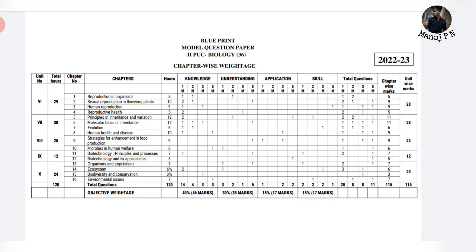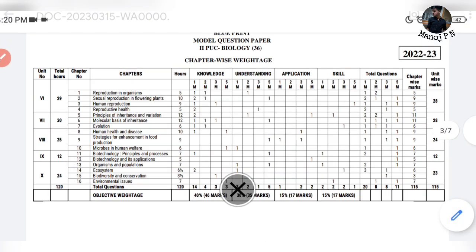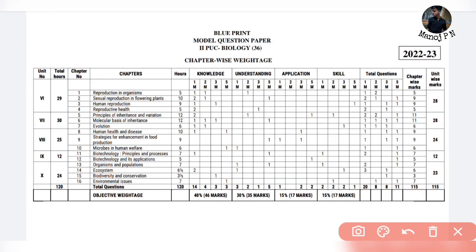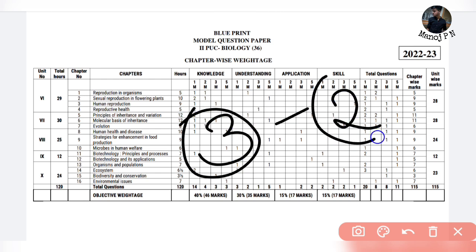Now we have the blueprint for 3-mark questions — there are certain chapters. When we look at the 2-mark section, you will be getting 3 choices. I'm not entirely sure, but the 2-mark section will have 3 choices, and the 3-mark section will be getting 2 choices.